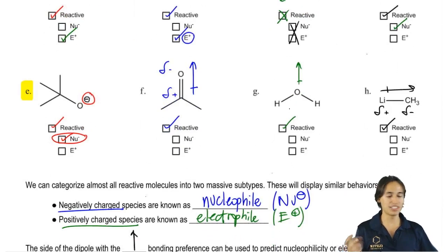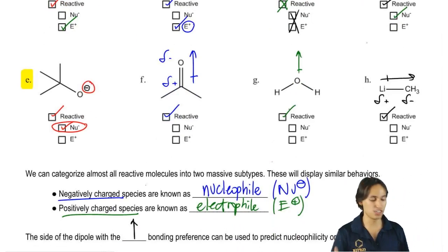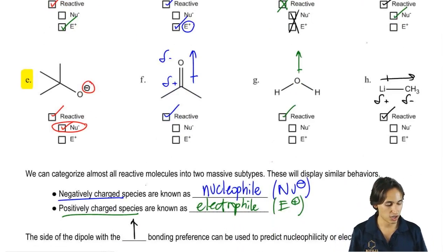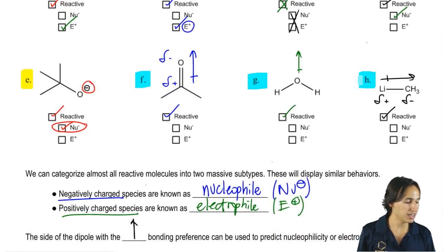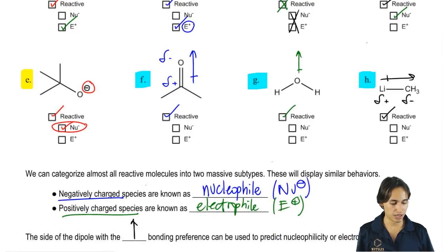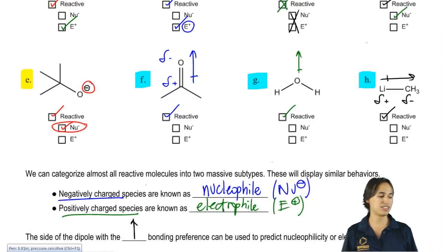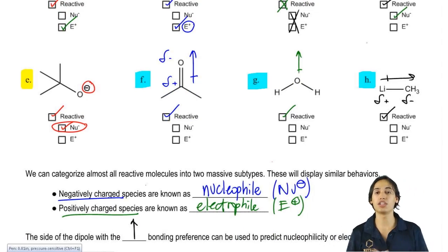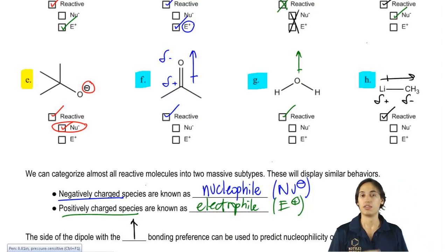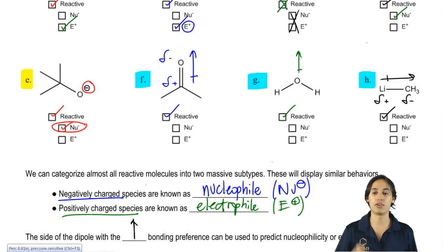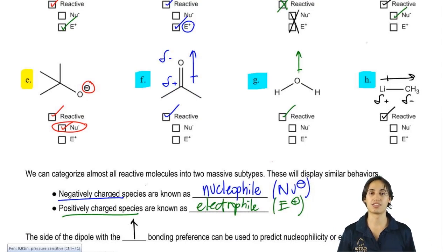So this has become a lot easier for you guys. All you need to do is identify F, G, and H and tell me whether they're going to be electrophiles or nucleophiles. Go ahead and pause the video now and use that rule to determine these last three.